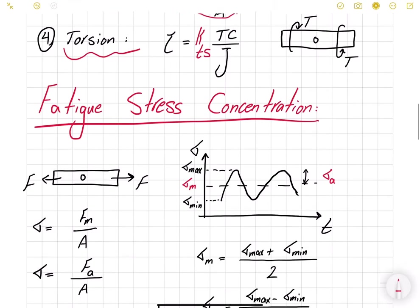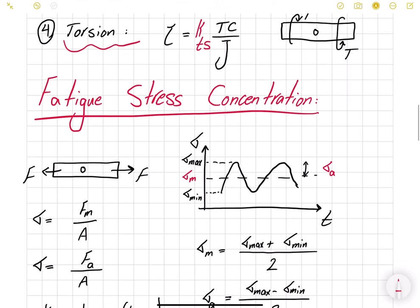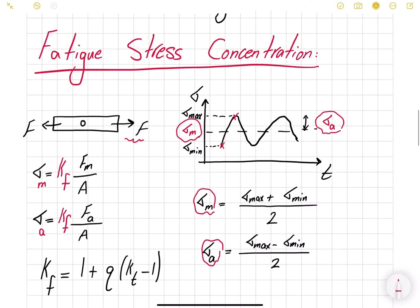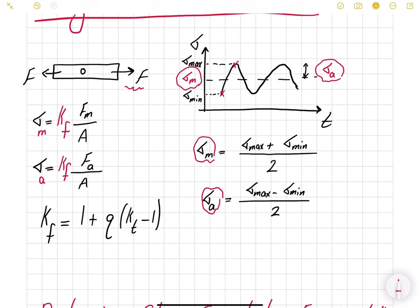For fatigue stress concentration, it's slightly different but is based on the static stress concentration. In fatigue, the load changes — it has a profile going from a minimum to a maximum value — so we find corresponding stresses from minimum to maximum. For fatigue, we decompose stresses into the alternating component and the mid-range component. The mid-range is the average of the two stresses and the alternating gives the amplitude. The factor we use is called Kf, where f denotes fatigue, and it depends on the static stress concentration.